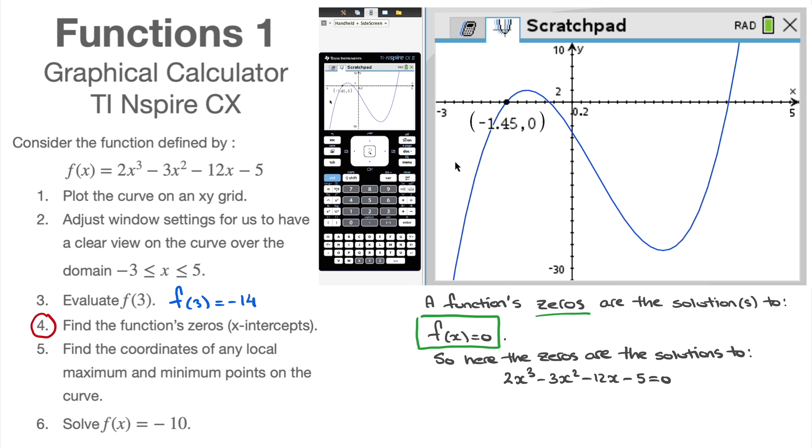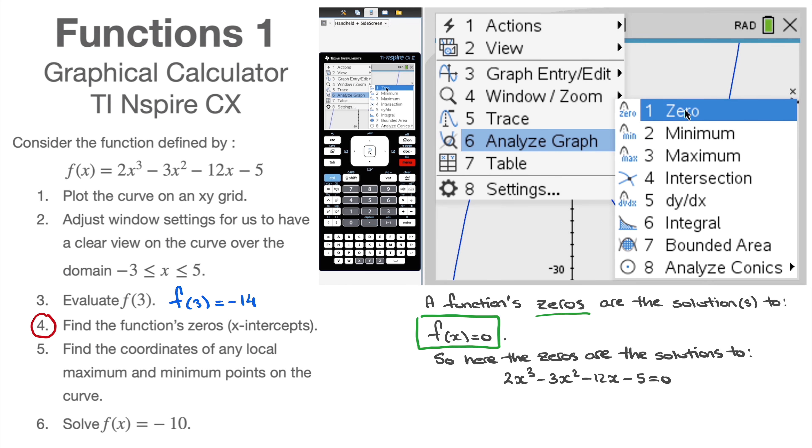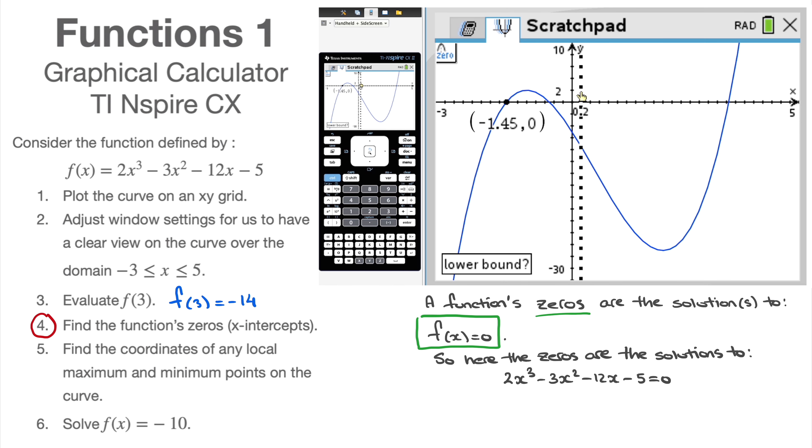We have two other solutions we have to find, though. So I follow that same path again. I click on menu, followed by analyze graph, followed by zero, and I look for the second one. I go to the left of that point. I click. I hover over to the right of that point, and I click. And I can see here it's got a little label. The second one is -0.5, -0.5, 0. So the equation f(x) = 0 has a second solution, -0.5.